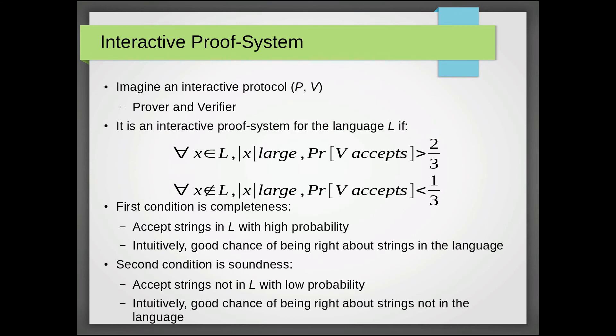So after covering interactive protocols, we can now go into actual interactive proof systems. So imagine that we have an interactive protocol P and V for the prover and the verifier. This protocol is an interactive proof system for the language L if,